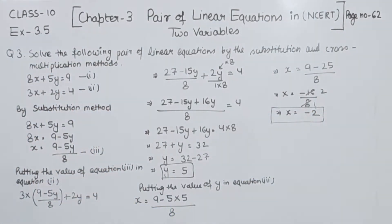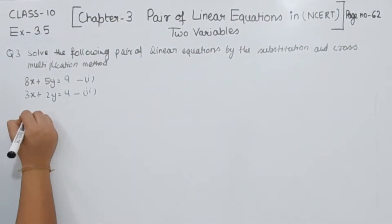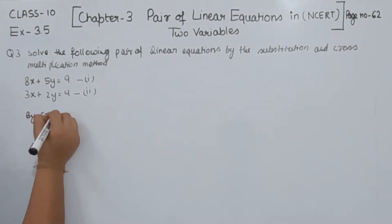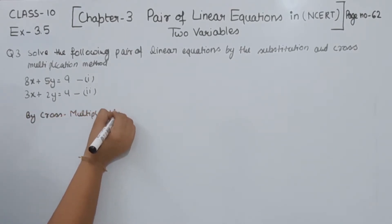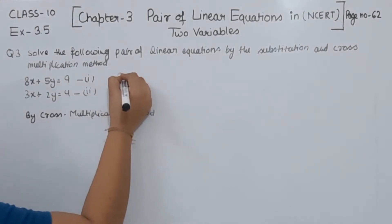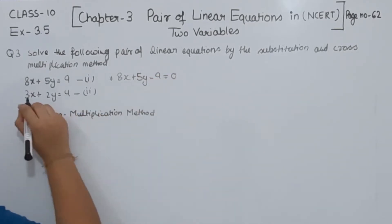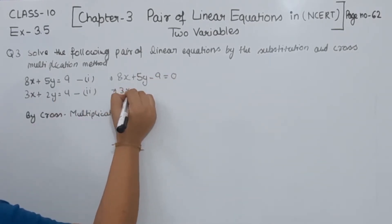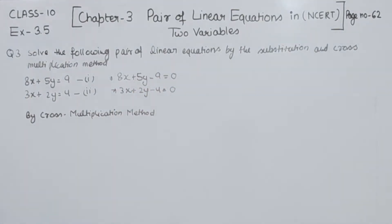This completes the solution by the substitution method. Now we are going to solve the same pair by the cross multiplication method. First, we transpose the constants: equation 1 becomes 8x plus 5y minus 9 equals 0, and equation 2 becomes 3x plus 2y minus 4 equals 0.